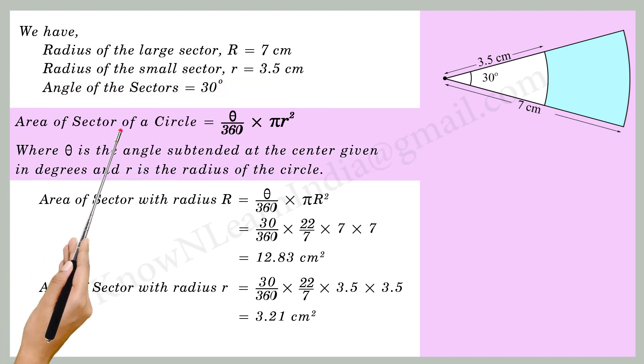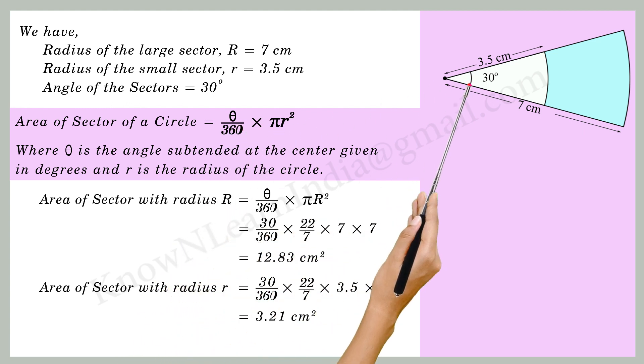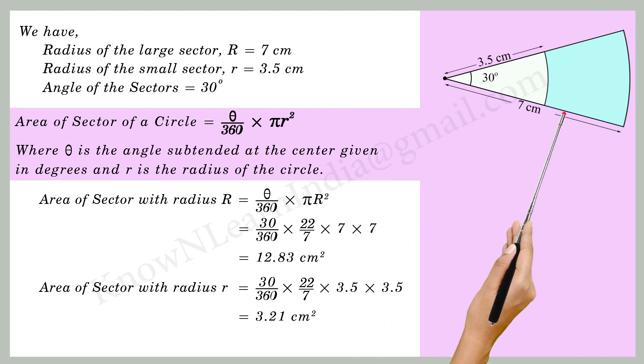We know area of the sector of a circle is equal to theta by 360 into pi r square, where theta is the angle subtended at the center given in degrees and r is the radius of the circle.